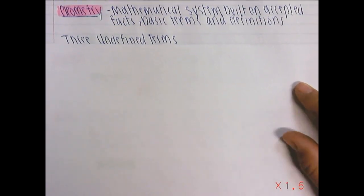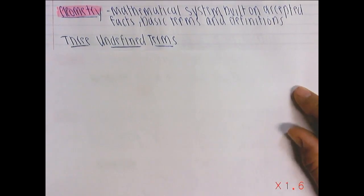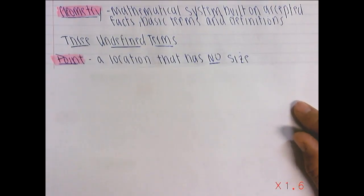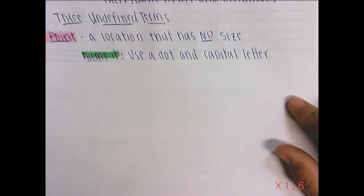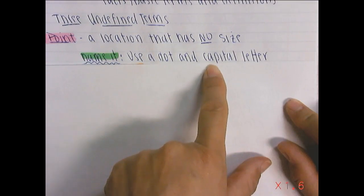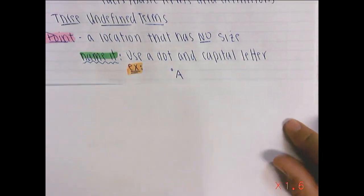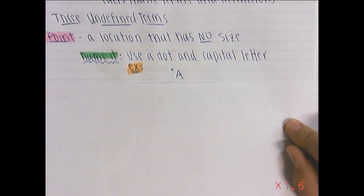The first three that we're going to go over are the undefined terms. Feel free to pause and rewind whenever you need. The first one is a point. It's a location that has no size. So we're going to name it using a dot and a capital letter. That capital letter is very important. An example would be this little dot with a capital A next to it. That would be a point. You would say point A. So that is our first undefined term.